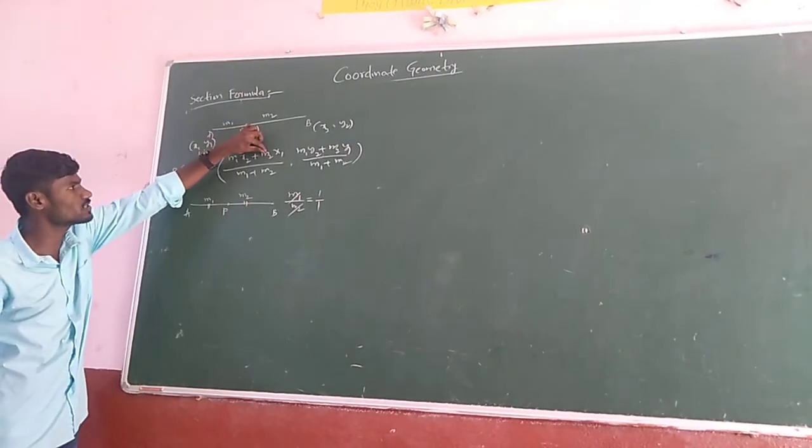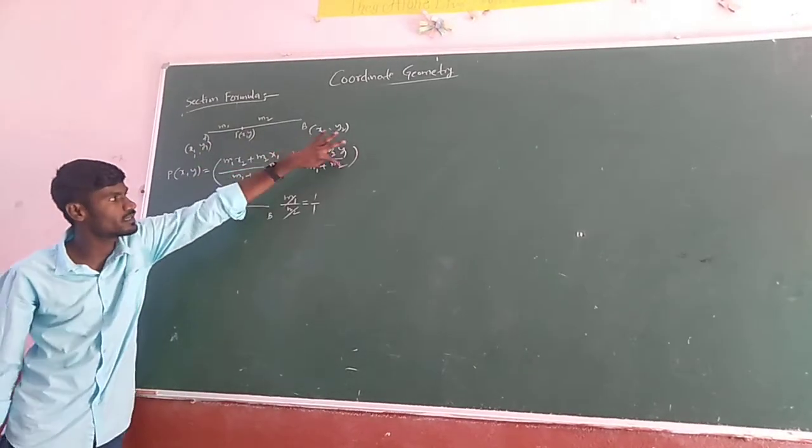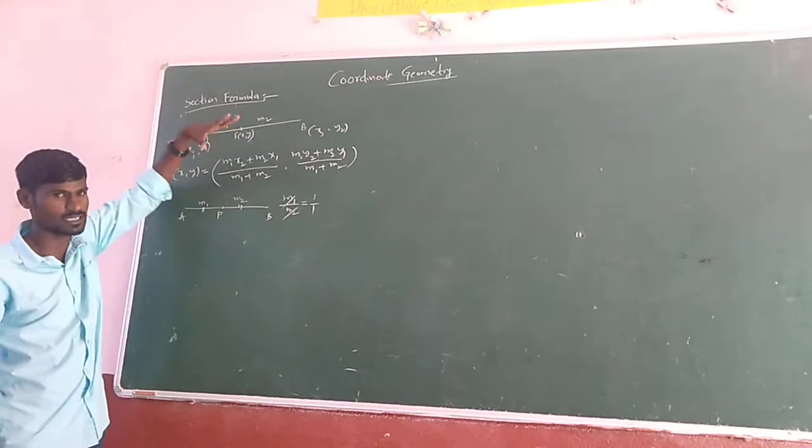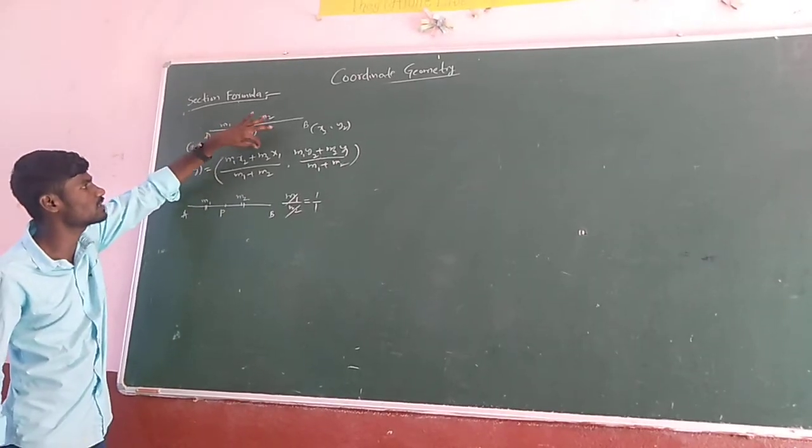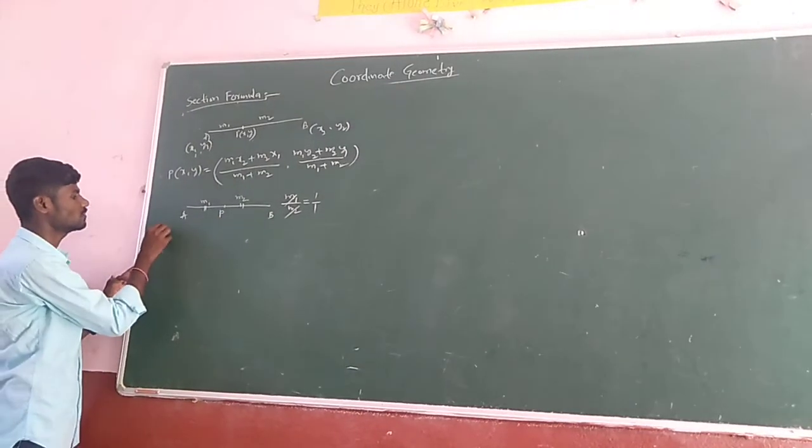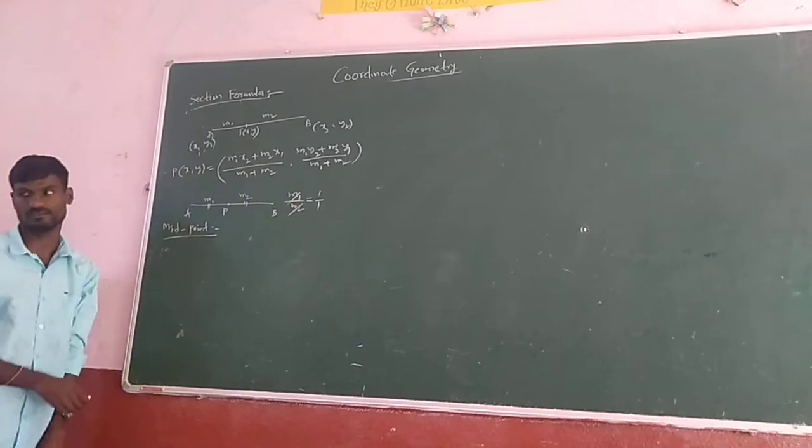Means if we get 1 and here also 1, 1 plus 1 is 2, 1 into X2 is X2, plus 1 into X1 is X1. Means what will we get? Simply X2 plus X1 by 2. Here also Y2 plus Y1 by 2. In that case, point P is said to be midpoint. So there we will get midpoint formula.